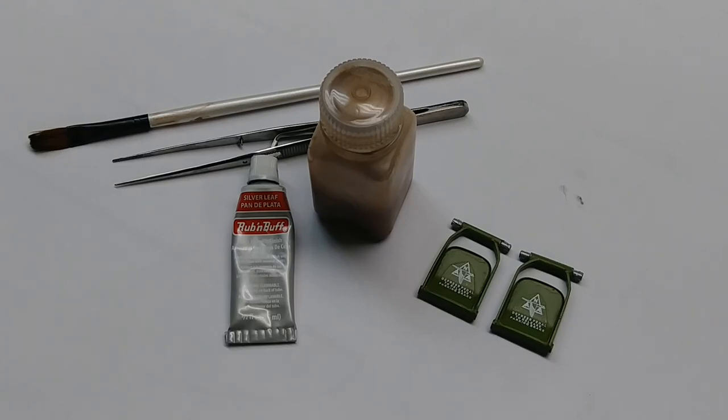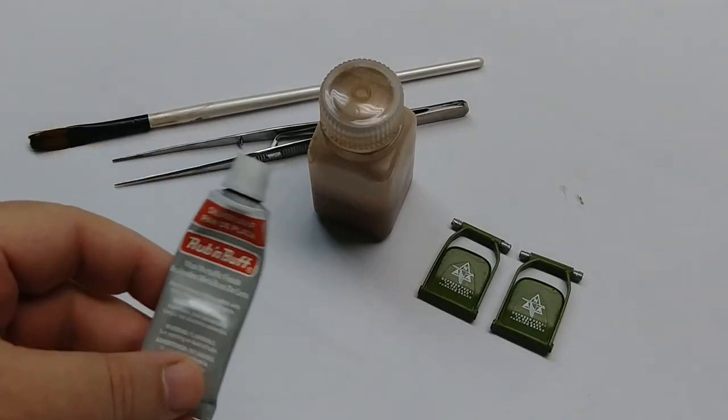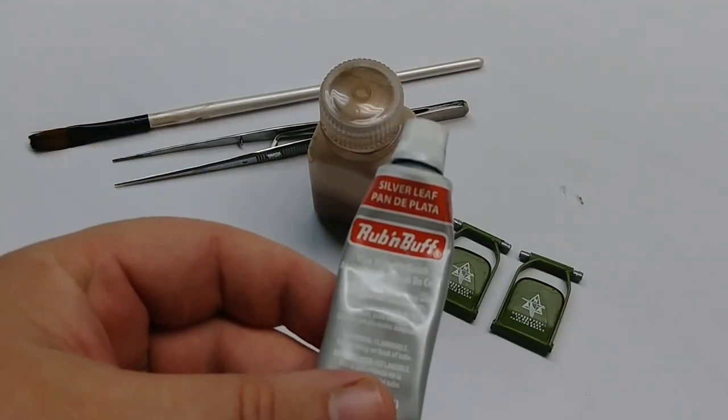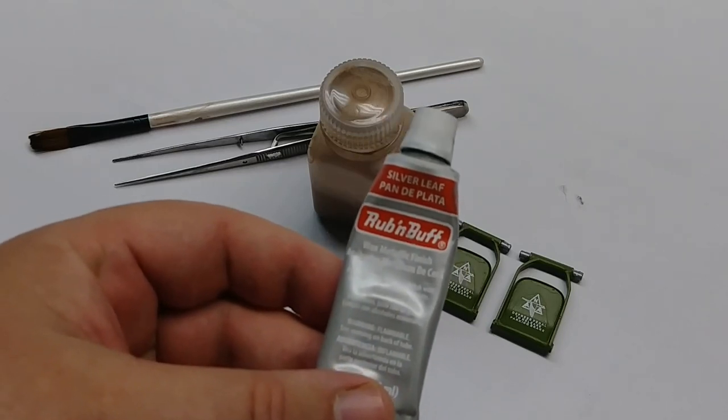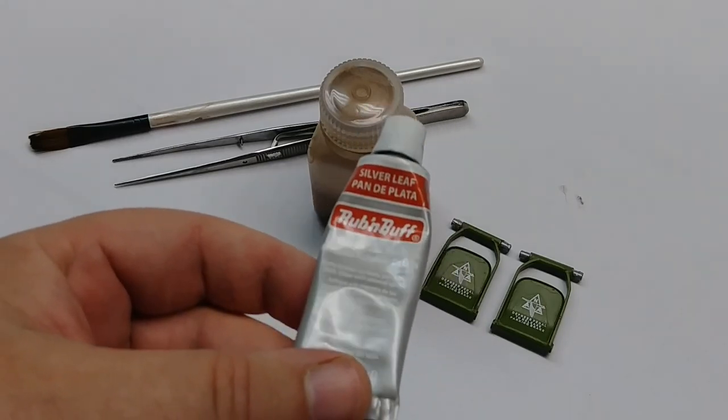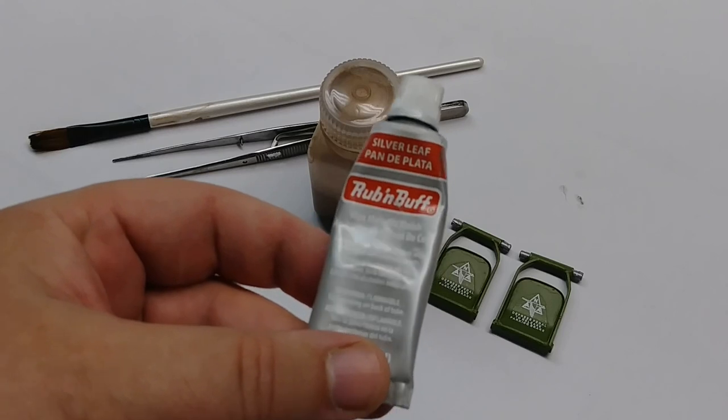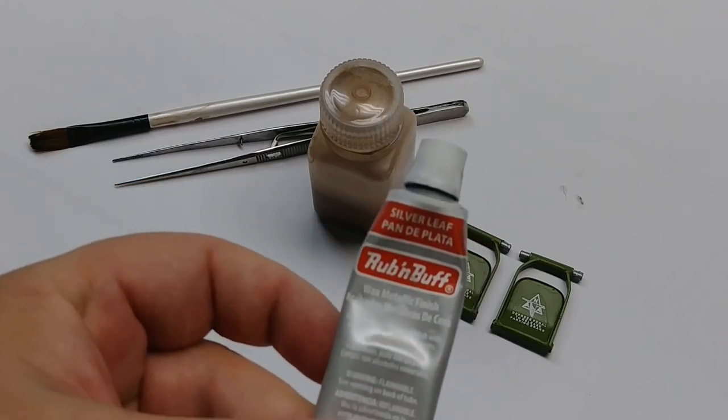To give it the worn look what I use is a product called Rub and Buff and you can find this in any craft store like Michael's or Hobby Lobby or any place like that or you can order it online.